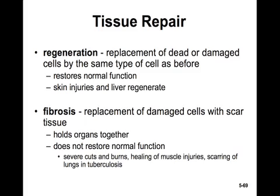Now let's look at tissue repair. Tissue repair involves regeneration — replacement of dead or damaged cells by the same type of cells as before — which restores normal function, as in skin injuries and liver regeneration. Fibrosis is the replacement of damaged cells with scar tissue, so it doesn't restore normal function; it just holds the organ together. Severe cuts and burns, healing of muscle injuries, and scarring of the lungs in tuberculosis will involve fibrosis.